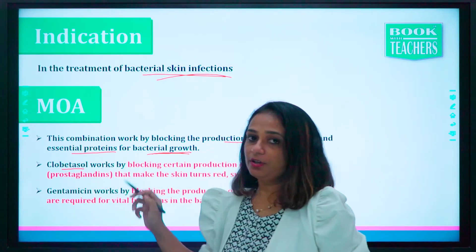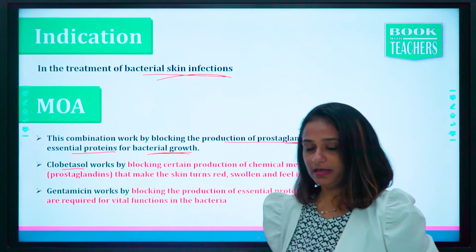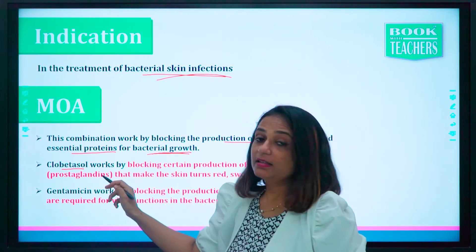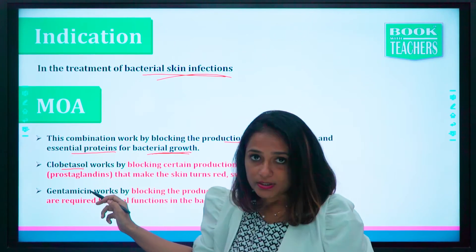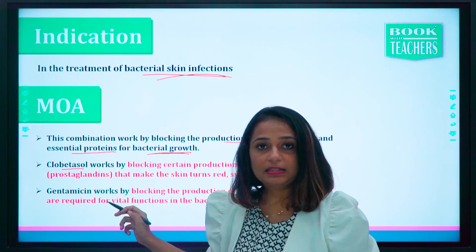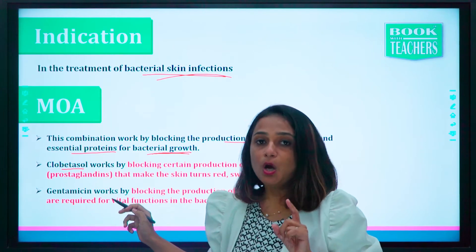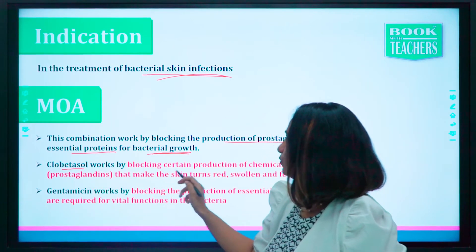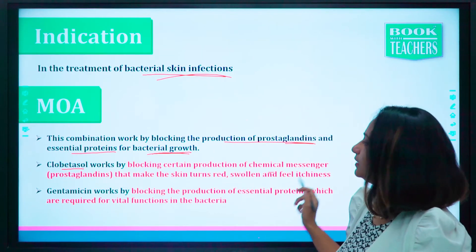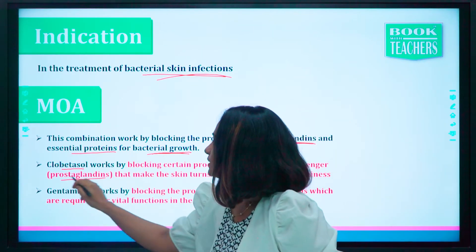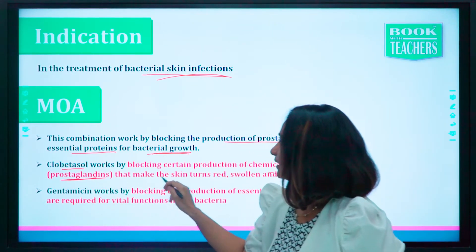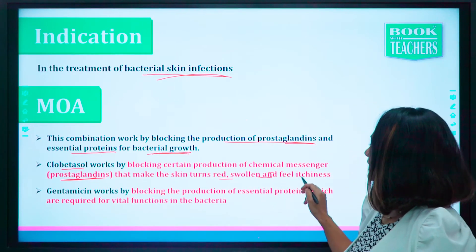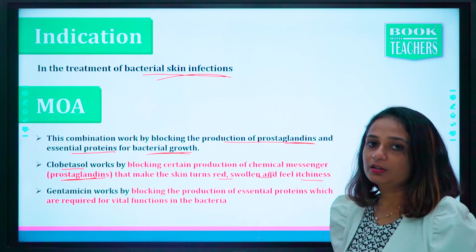The first ingredient is clobetazole. It is a corticosteroid — we have seen examples of corticosteroids before. Clobetazole works by blocking the production of chemical messengers called prostaglandins, which make the skin turn red, swollen, and feel itchiness.